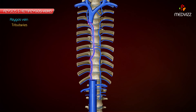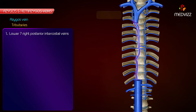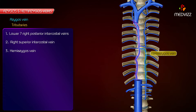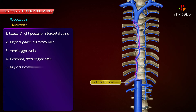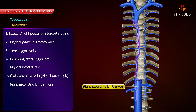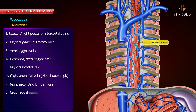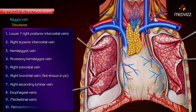Tributaries. The tributaries of the azygous vein are as follows: lower 7 right posterior intercostal veins except the first; right superior intercostal vein; hemiazygous vein; accessory hemiazygous vein; right subcostal vein; right bronchial vein; right ascending lumbar vein; oesophageal veins, with the exception of those at its lower end; mediastinal veins; and pericardial veins.